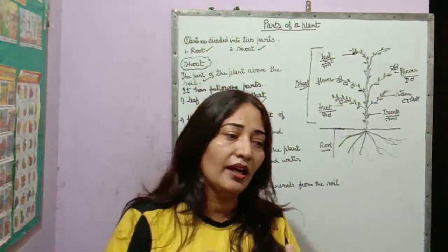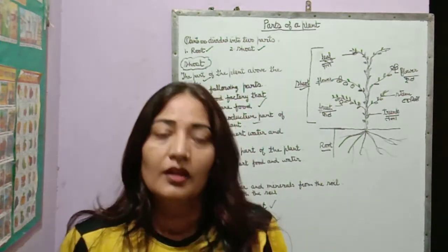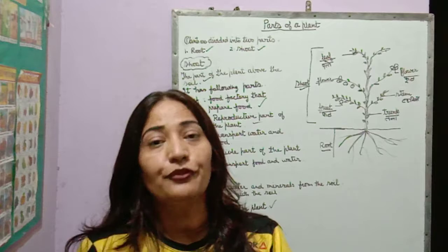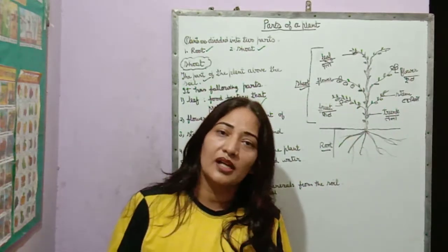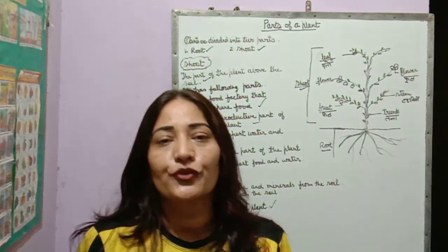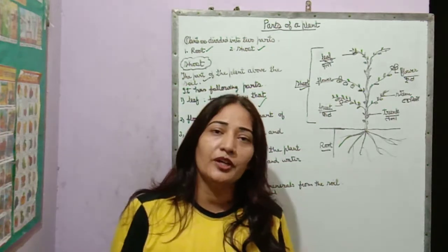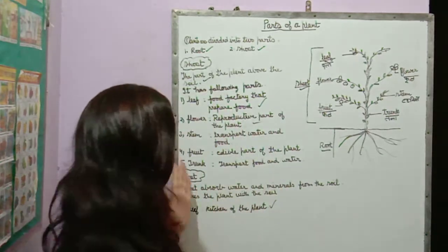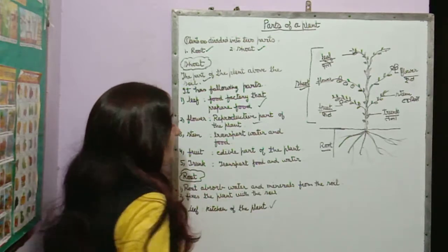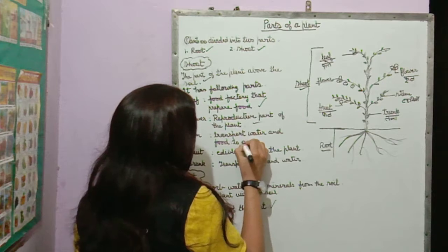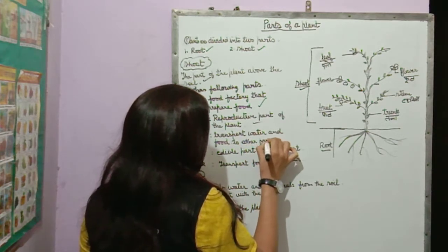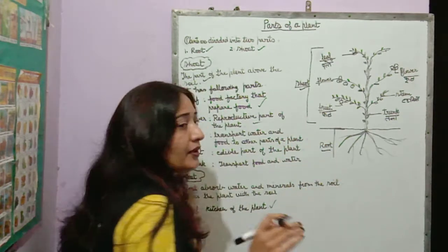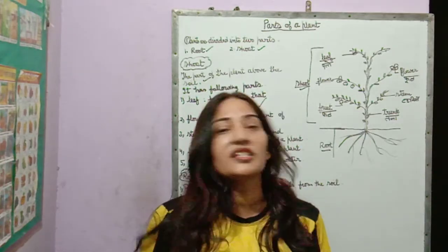But how does the food go beyond the leaves to other parts of the plant? With the help of the stem, food is transferred to different parts of the plant. The stem transports water and food to other parts of the plant.